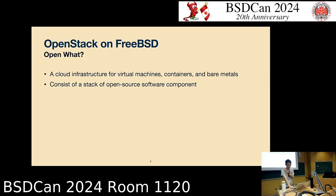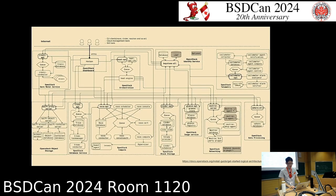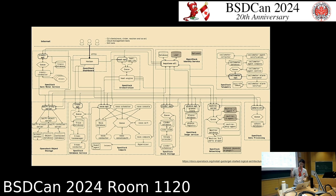Let me briefly introduce OpenStack. It's basically a cloud infrastructure that can manage virtual machines, containers, and bare metals. It consists of a stack of open source software components. This is the big picture of the OpenStack 'big tent' — there are plenty of components not listed on this graph; these are only the essential ones.